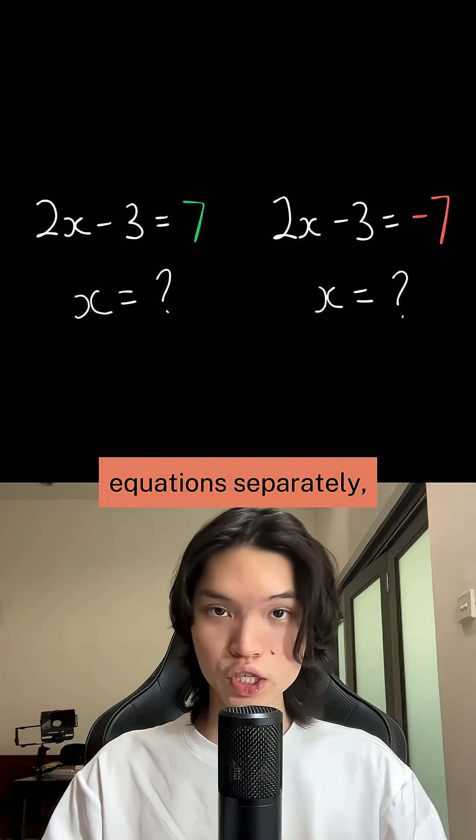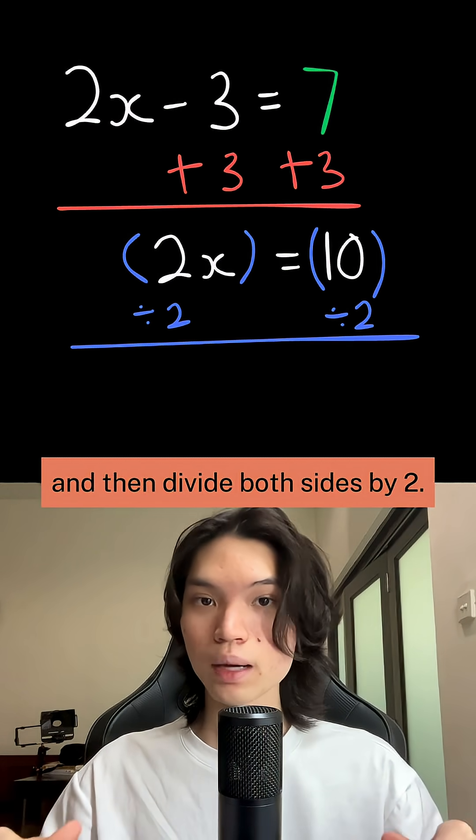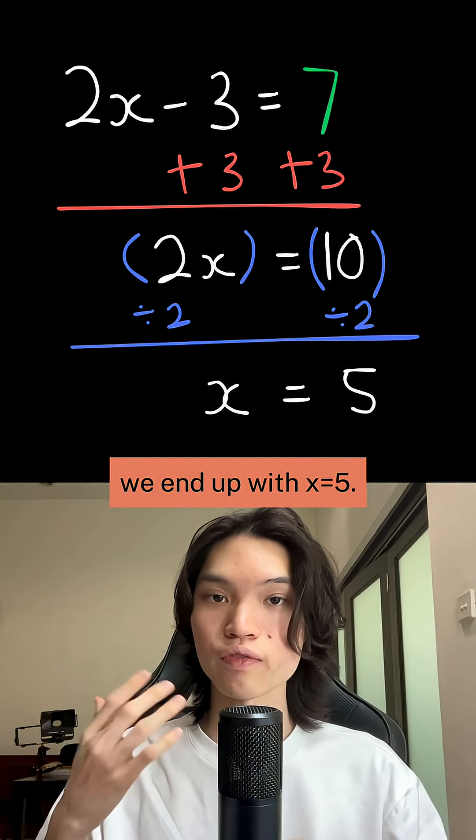We can solve each of these equations separately to find the answers. For the first one, add 3 to both sides and then divide both sides by 2. We end up with x equals 5.